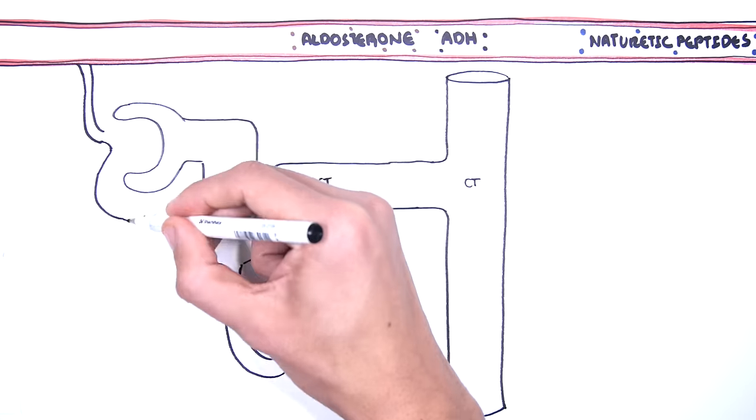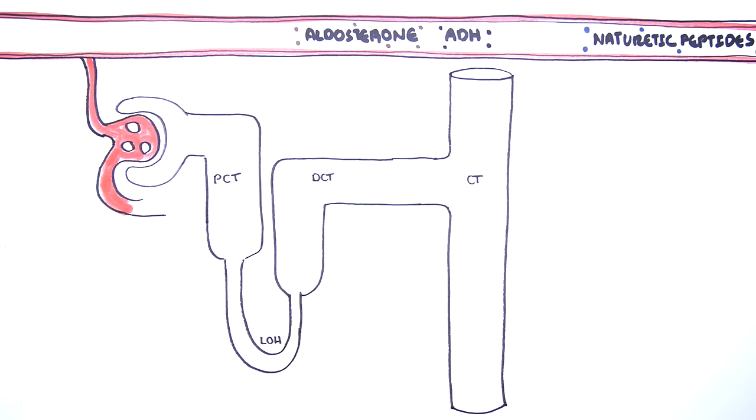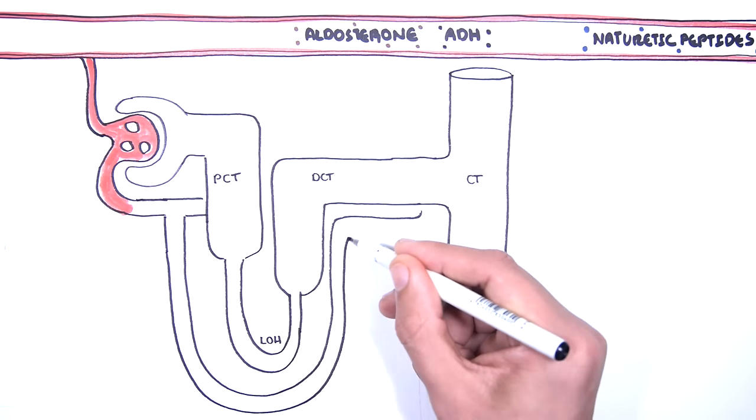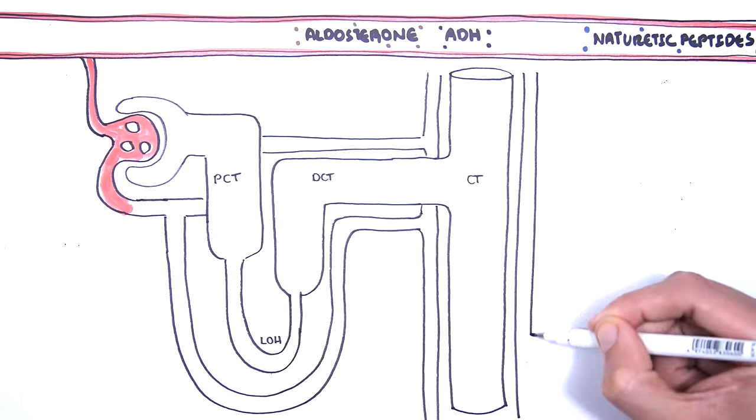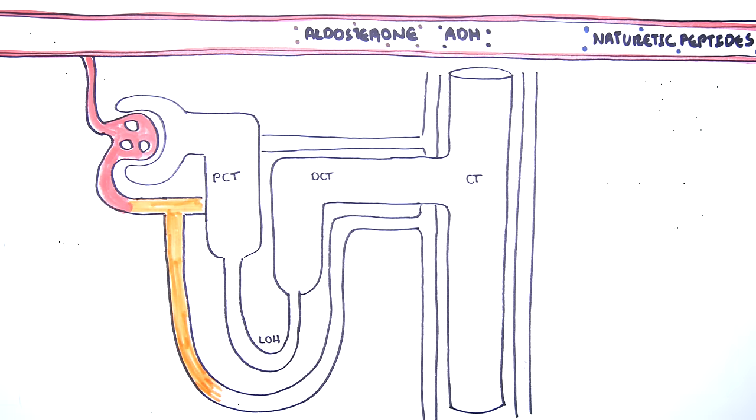Fluid enters the head of the nephron via the afferent artery and forms the glomerulus. The glomerulus then exits the Bowman's capsule to form the vasa recta, here in orange, which secretes and reabsorbs solutes along the renal tubule.